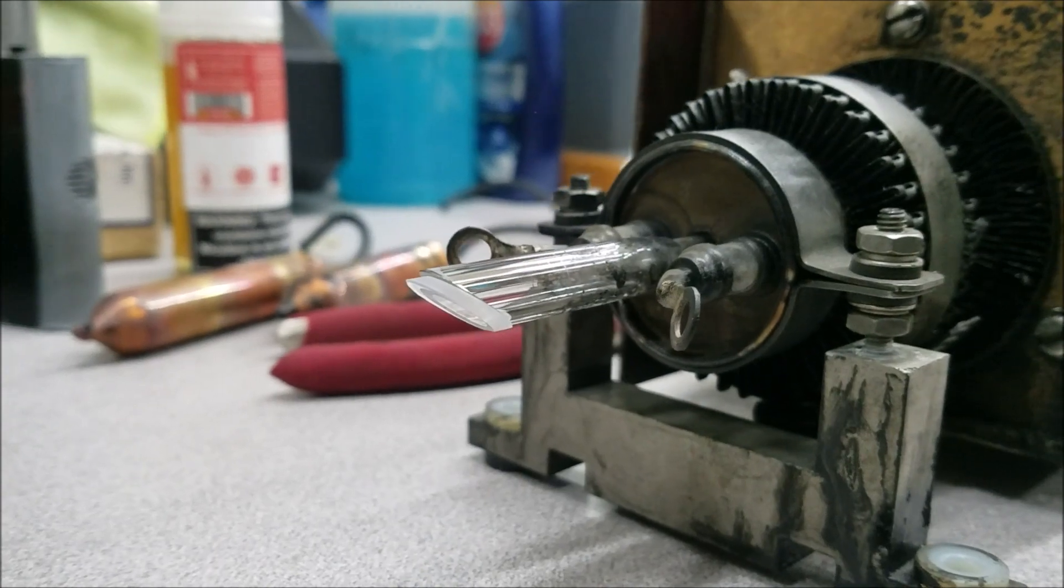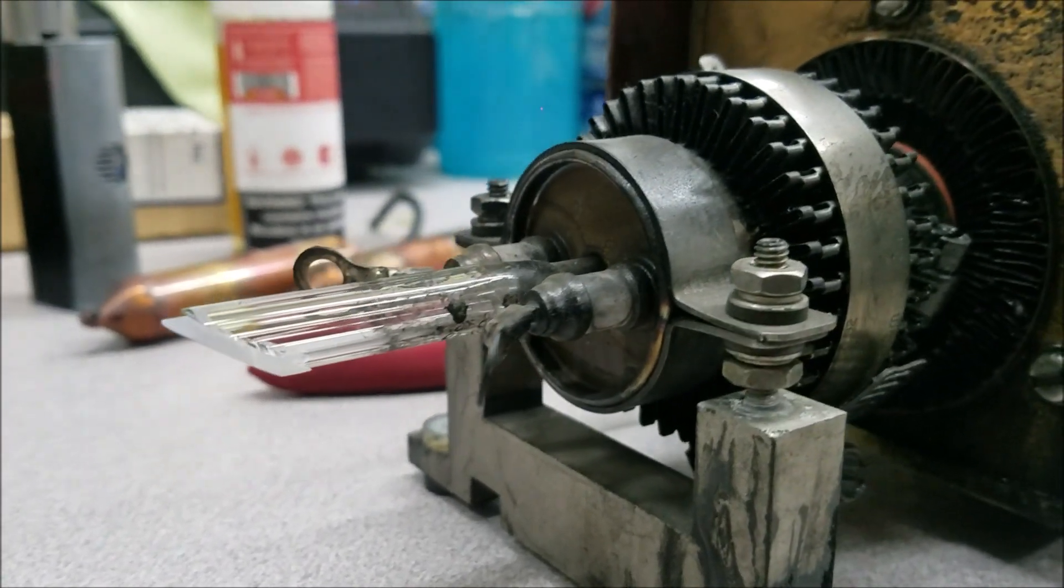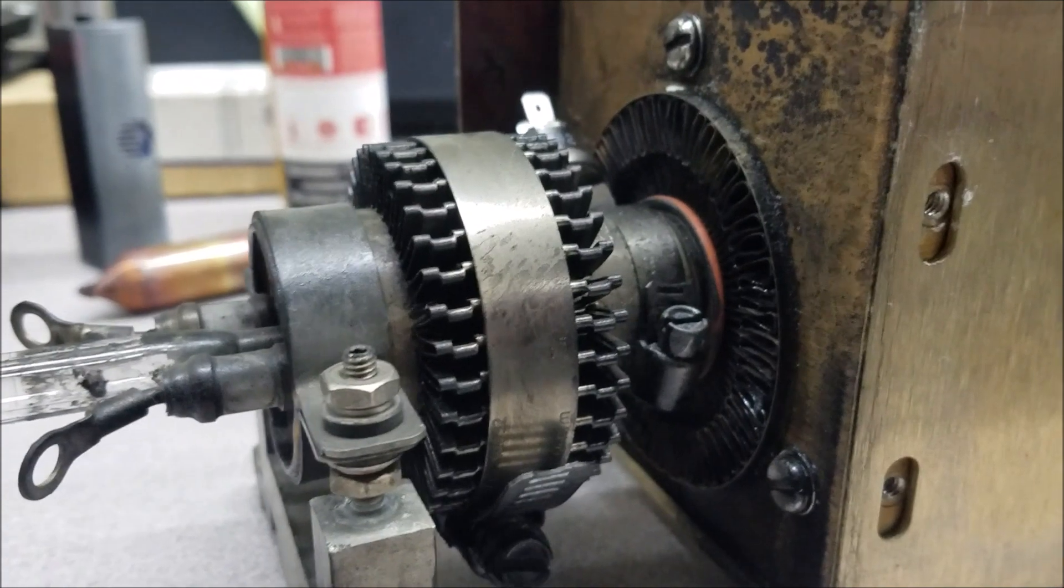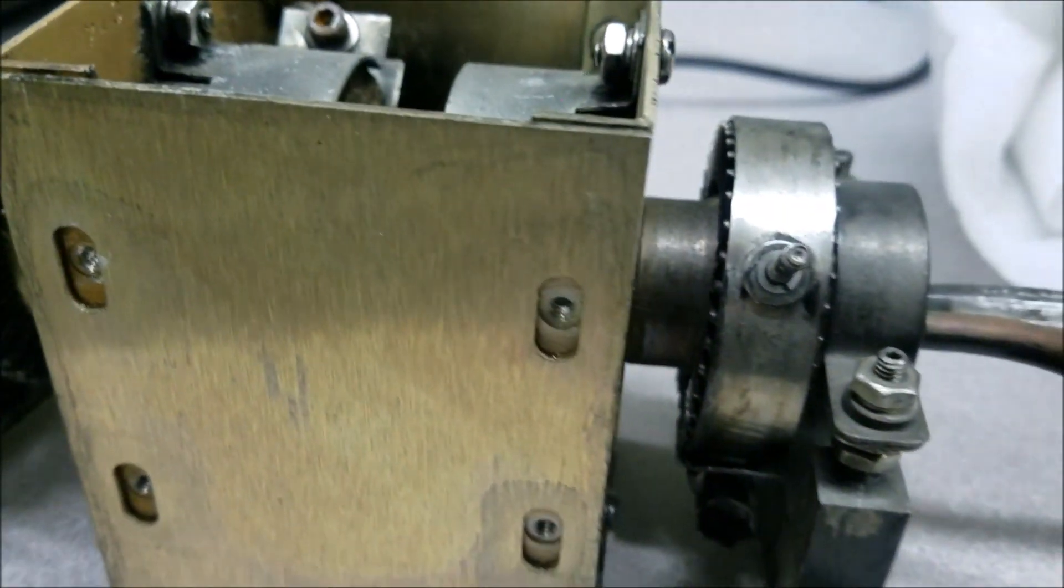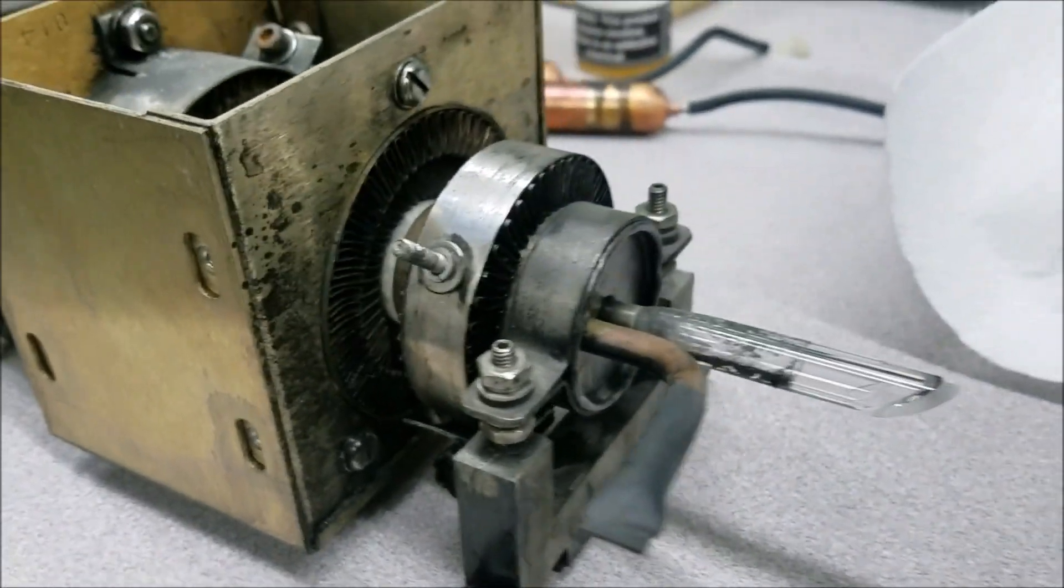This is the laser tube itself. On each end has a specially angled piece of glass called a Brewster window. These are found in most gas lasers as well. Their function is to polarize the light as it travels between a high reflector and output coupler.